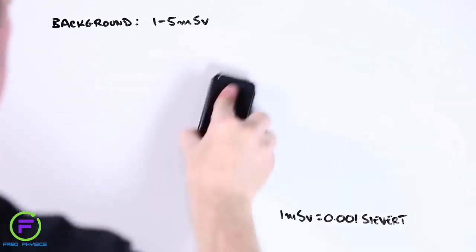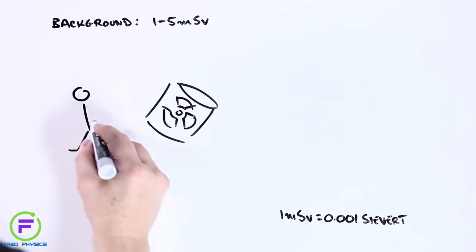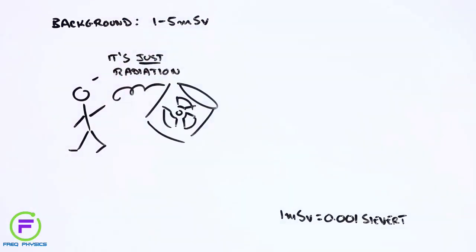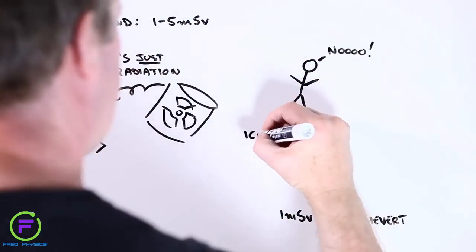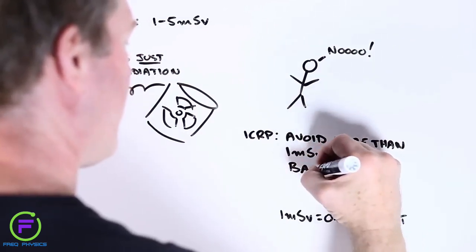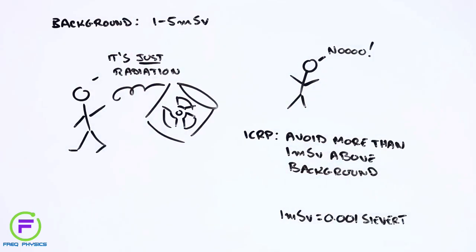This doesn't mean we can afford to become complacent about radiation, though. The International Commission on Radiological Protection recommends not exceeding background radiation levels by more than one-thousandth of a sievert per year.